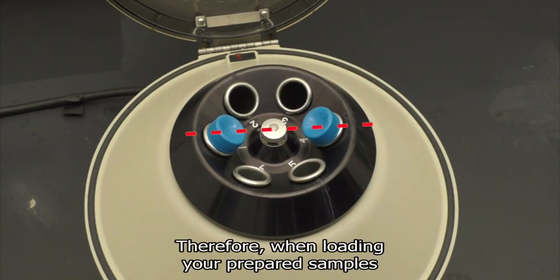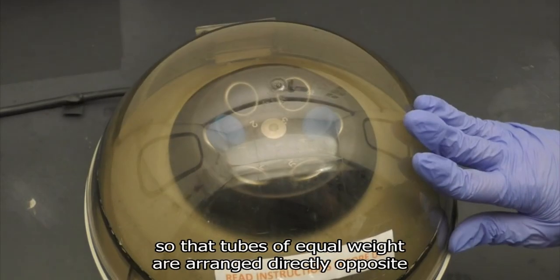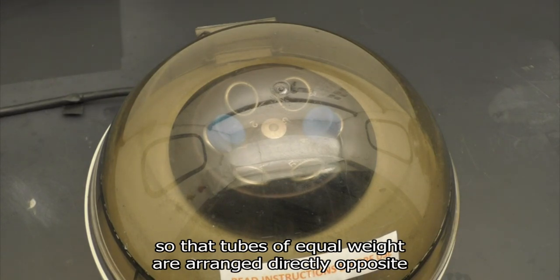Therefore, when loading your prepared samples into the centrifuge, open the lid and load the rotor such that tubes of equal weight are arranged directly opposite one another.